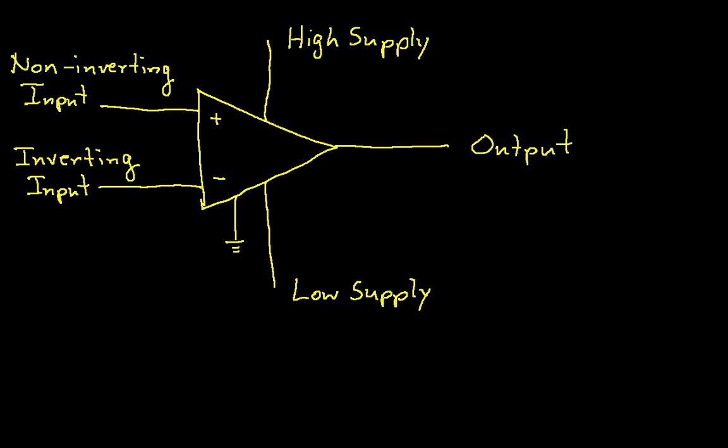So what we have on the screen is the op-amp symbol. This shows everything that you might want to think of connecting to an op-amp in a circuit. We'll start with the supplies. The high supply and the low supply are basically the power supplies to the op-amps. The high supply, you typically connect to a voltage source somewhere between 15 and 5 volts, depending on the op-amp.